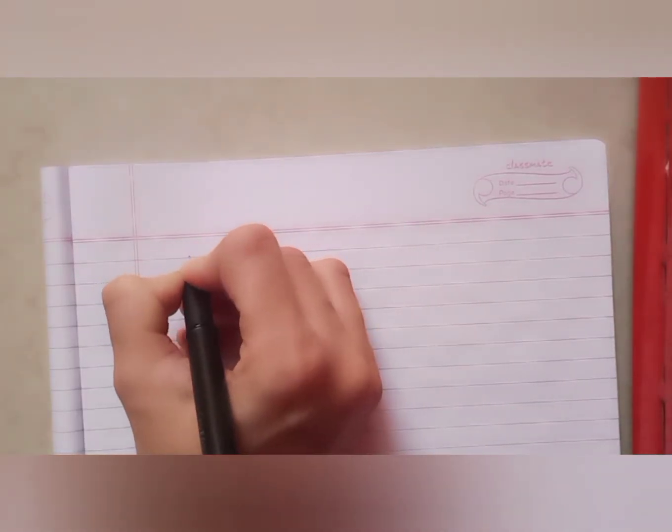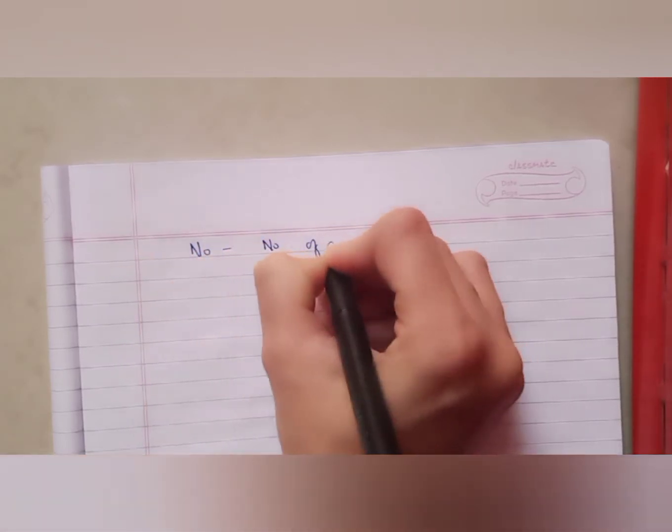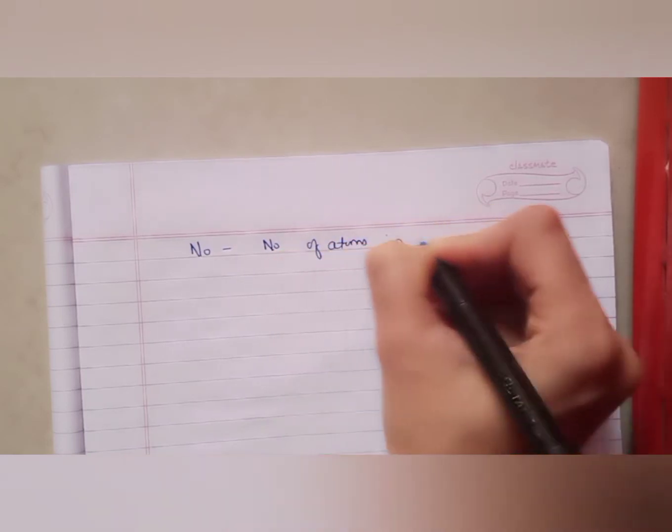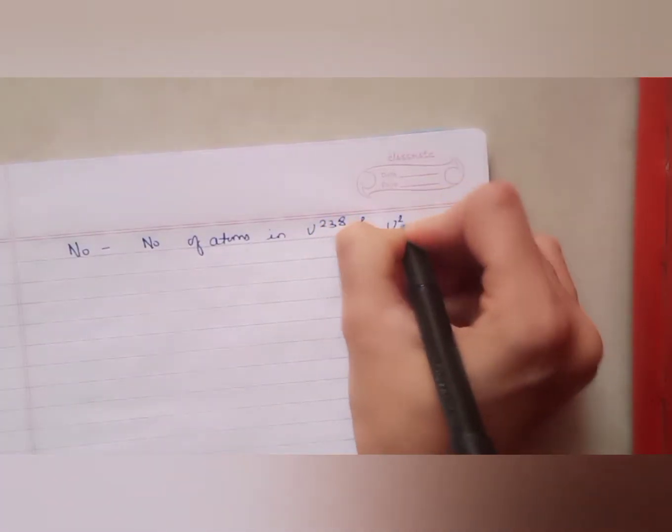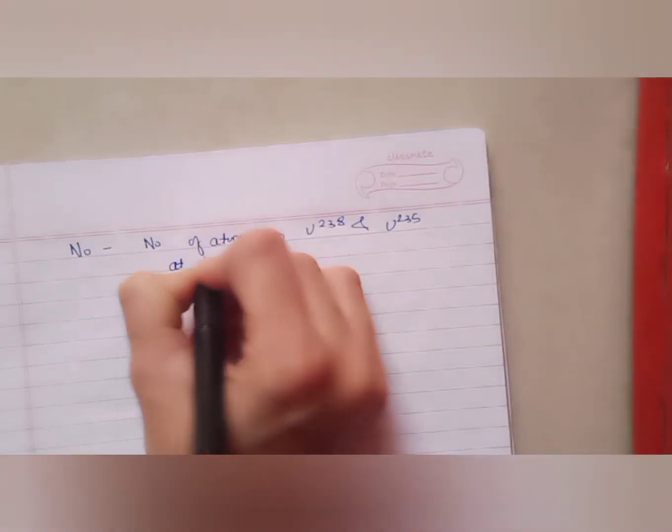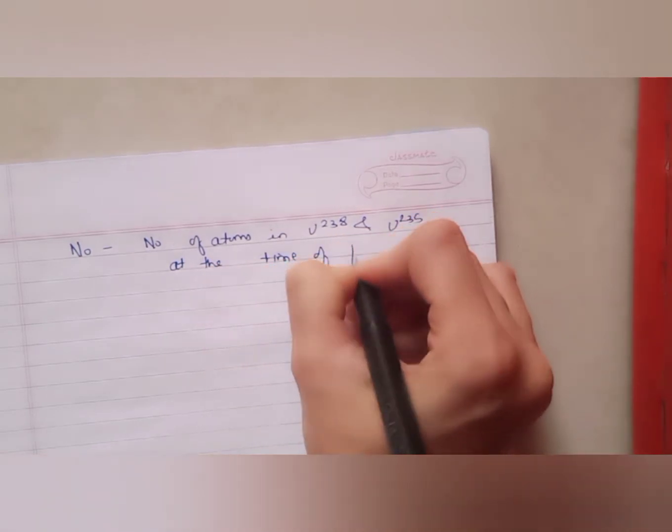So let's solve. At the time of formation of earth, the number of atoms in Uranium-238 and Uranium-235 were in the ratio 1 to 1. That means we can take N₀ to be the number of atoms in both Uranium-238 and Uranium-235 because they are equal. This will be at the time of formation of earth.